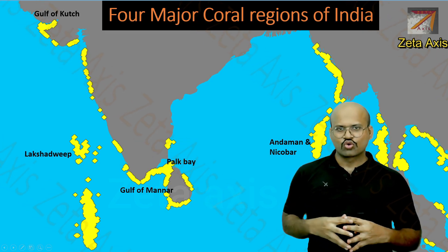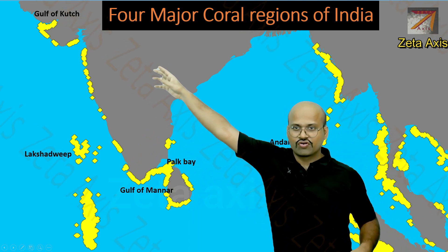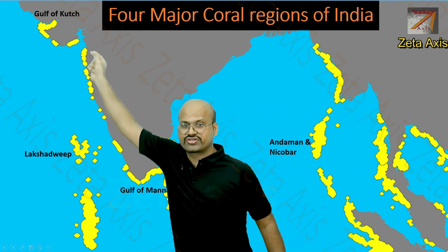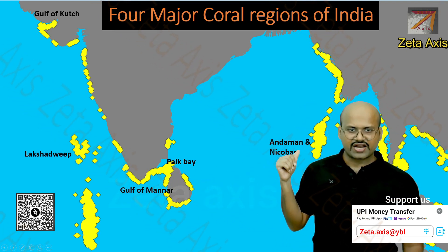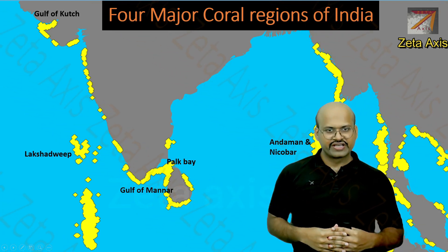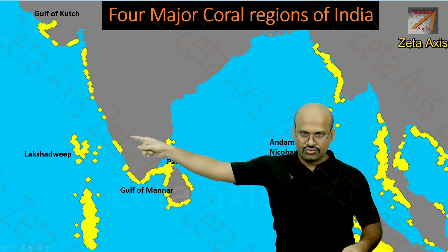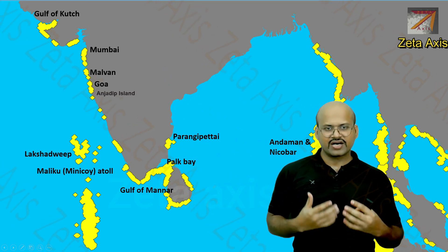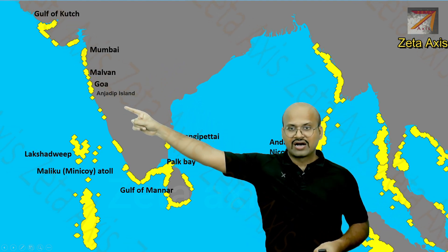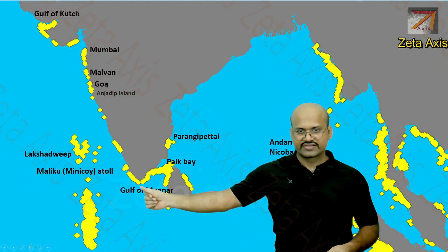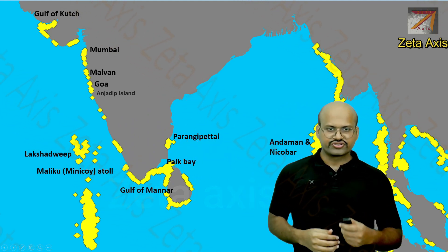Here are the four major coral regions of India. The first is Lakshadweep, then the Gulf of Kutch in Gujarat, then Palk Bay and the Gulf of Mannar, and finally Andaman and Nicobar Islands — both of which are considered as one region. Other important coral regions of India include Mumbai, Malvan, Anjidiv Islands, Minikoy Islands, and Purangi Petri in Tamil Nadu near Puducherry.